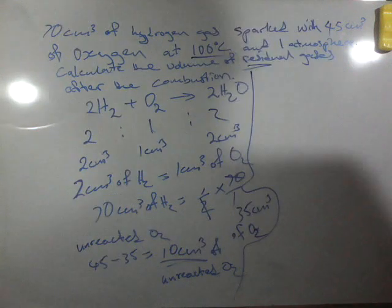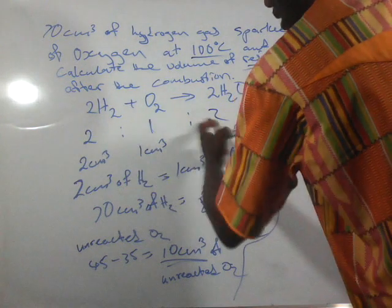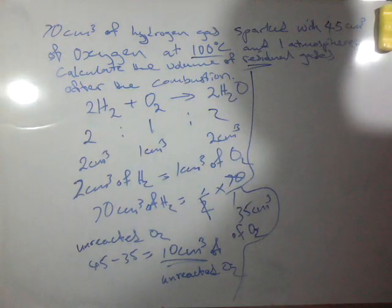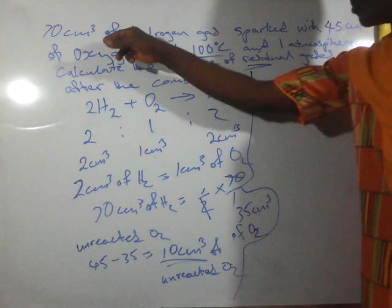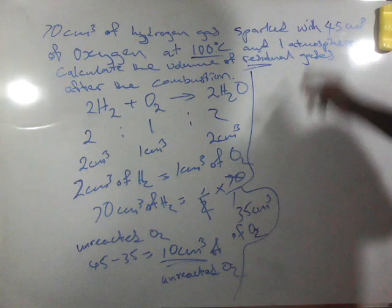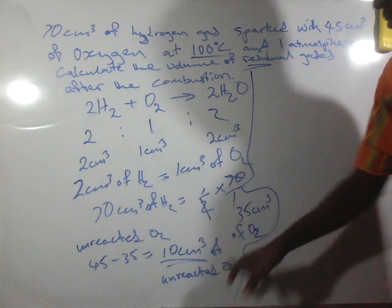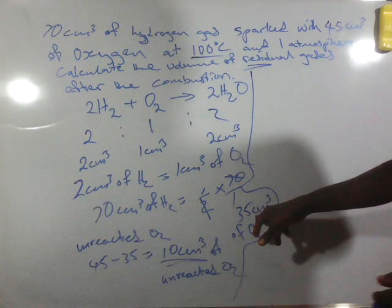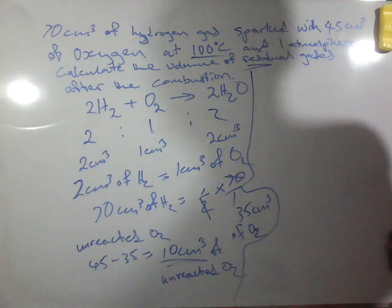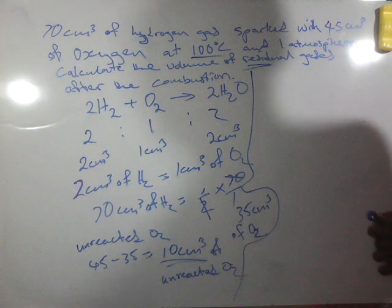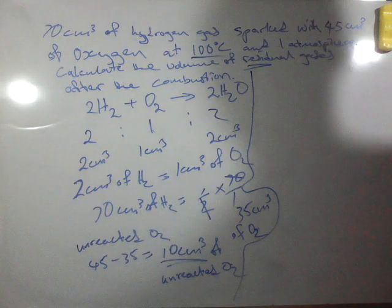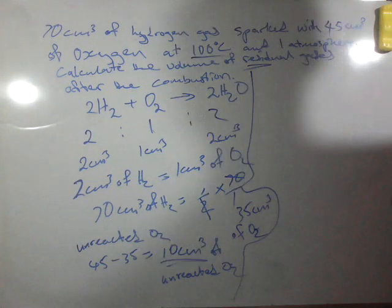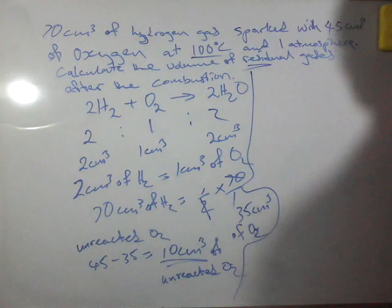Now looking at this, from this ratio, it means that they combine in the same ratio. If 70 cm³ of hydrogen will combine with 35 cm³ of oxygen, it will give us 70 cm³ of water vapor or steam.